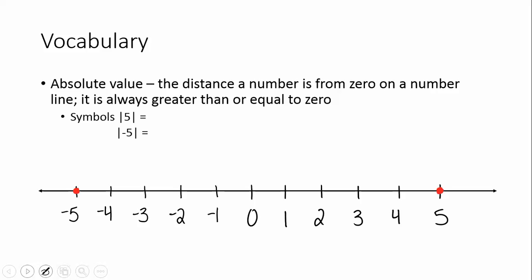The last vocabulary term is absolute value. That's the distance a number is from 0 on a number line. It is always greater than or equal to 0. If we look at the absolute value of 5, those vertical bars around a number mean absolute value. How far is the number 5 away from 0? You can count: 1, 2, 3, 4, 5. So the absolute value of 5 is 5.